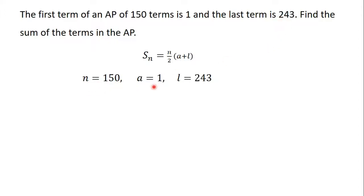So n = 150, a = 1, and l = 243. We substitute this information into the formula to find the sum of the terms in the AP.